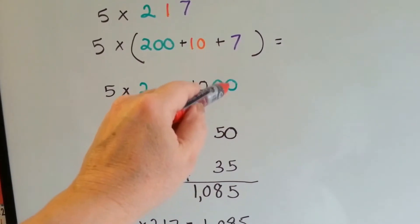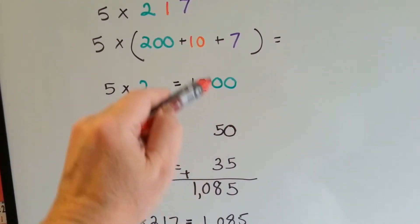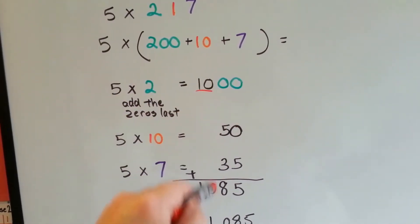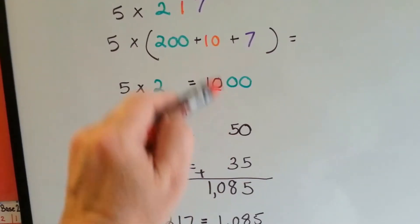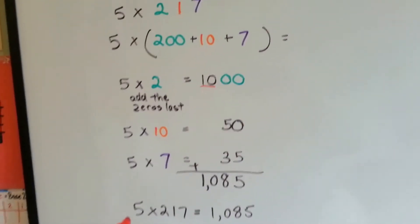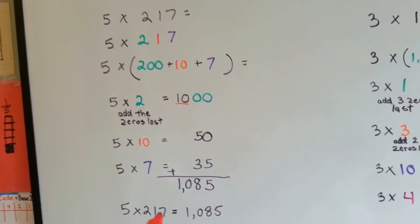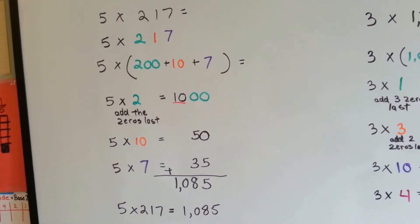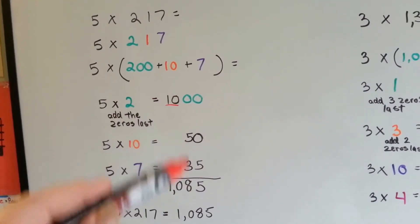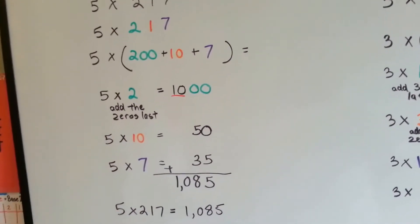Now we add them up. 0 and 0 and 5 is 5. 5 and 3 is 8. 0 drops down. The 1 drops down. So we get 5 times 217 is 1,085. And we did that in expanded form all broken up, getting partial products.